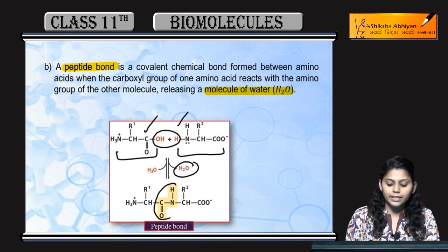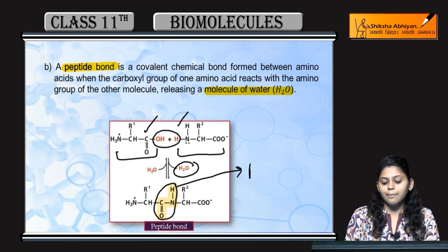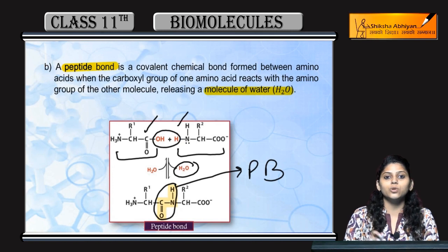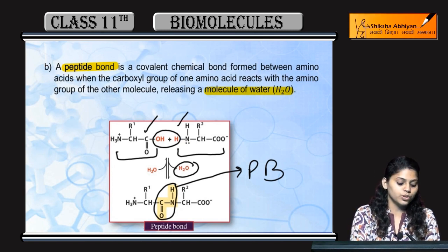And C-O-N-H। C-O-N-H कौन सा bond है? C-O-N-H है peptide bond। So ये C-O-N-H bond बनता है दो amino acids से जब उसमें से water की removal हो जाती है।